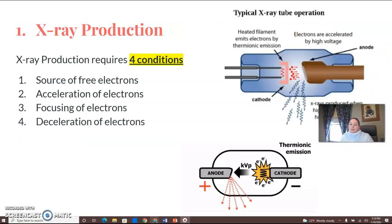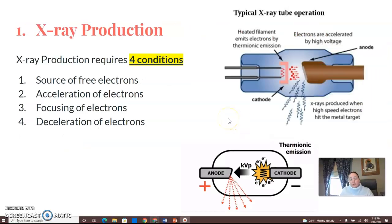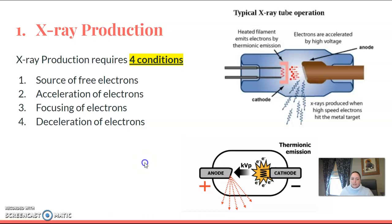We're going to start with the basics of X-ray production. You need four conditions for X-ray production: a source of free electrons, an acceleration of those electrons, a way to focus them, and a way to decelerate or slow down those electrons. We're going to break down those things.